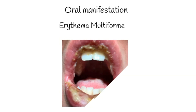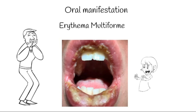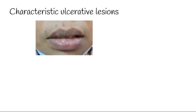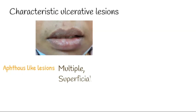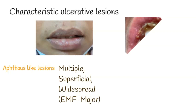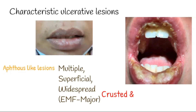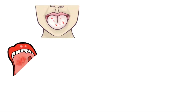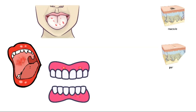Within the mouth, erythema multiforme characteristically presents as an ulcerative disease, varying from a few aphthous-type lesions to multiple superficial widespread ulcers. In erythema multiforme major, the most common feature showing involvement of the oral mucosa is the appearance of crusted and hemorrhagic lips. The tongue, buccal mucosa, gingiva, etc. can also show macules, papules, or even blisters, which may rupture causing bleeding and pain to the patient.